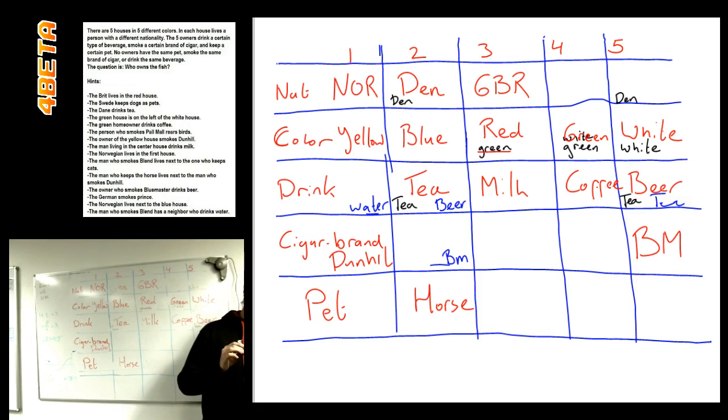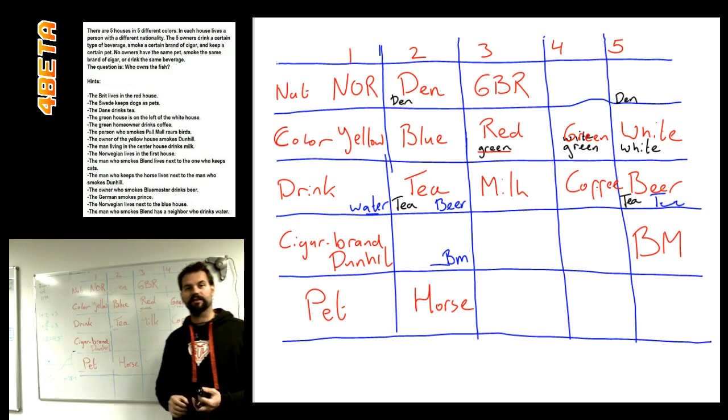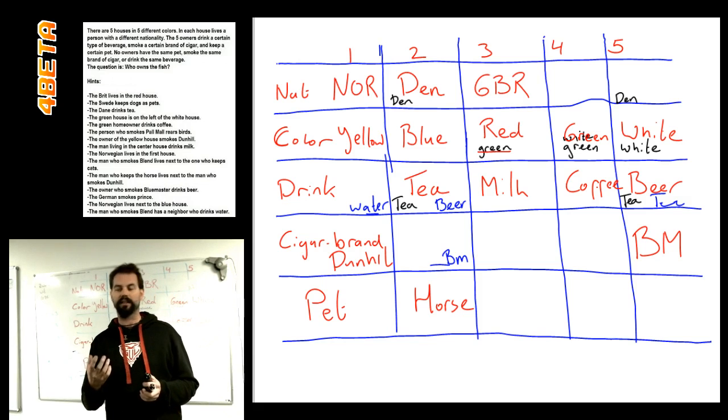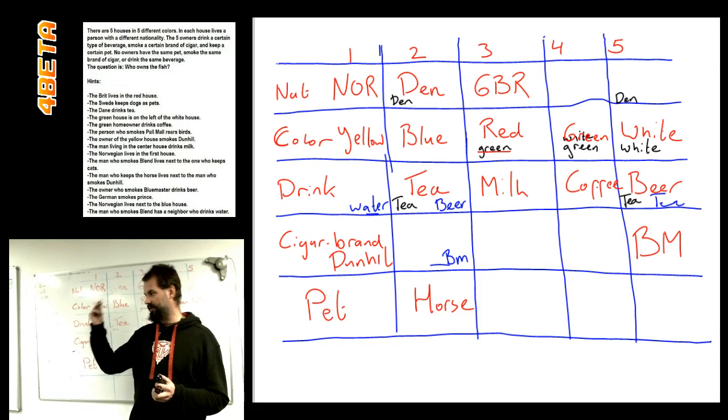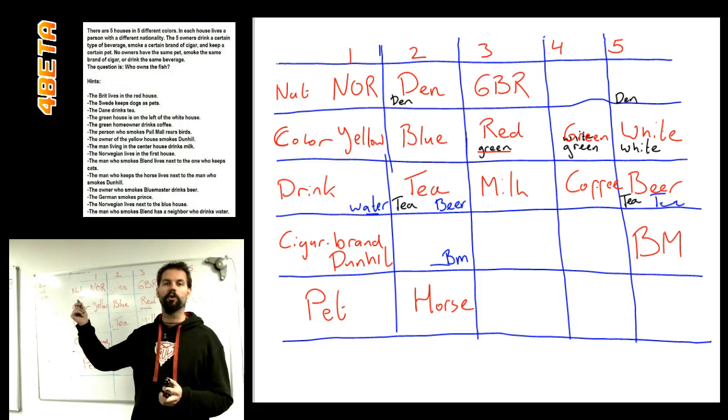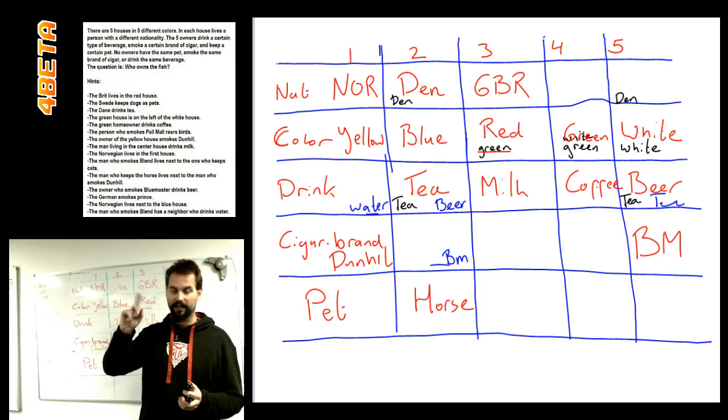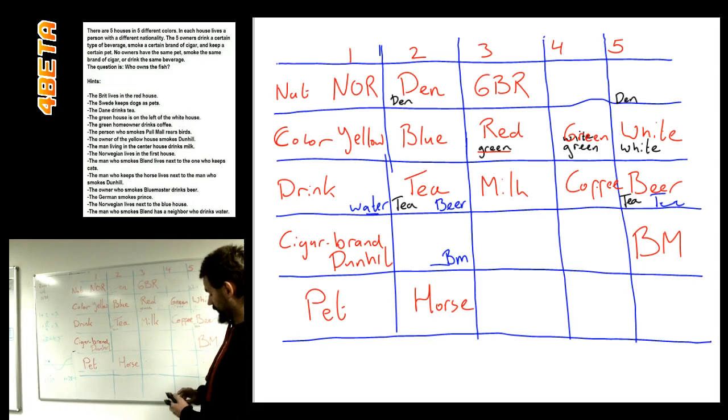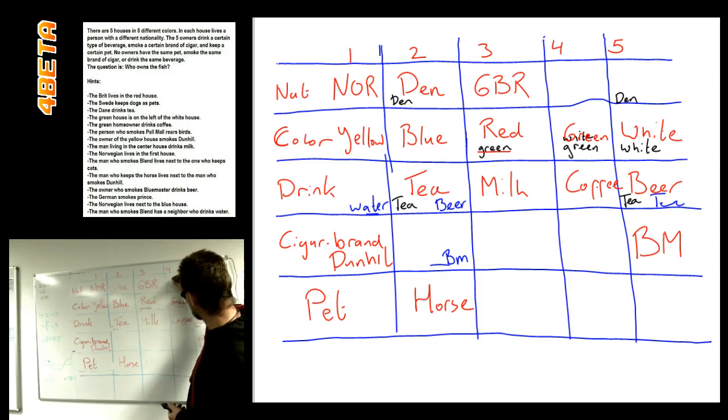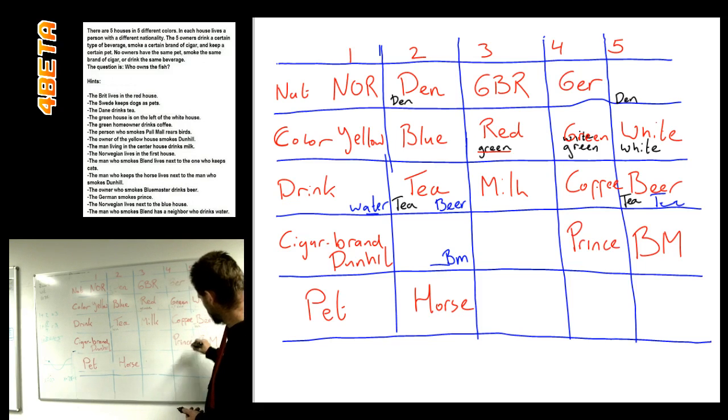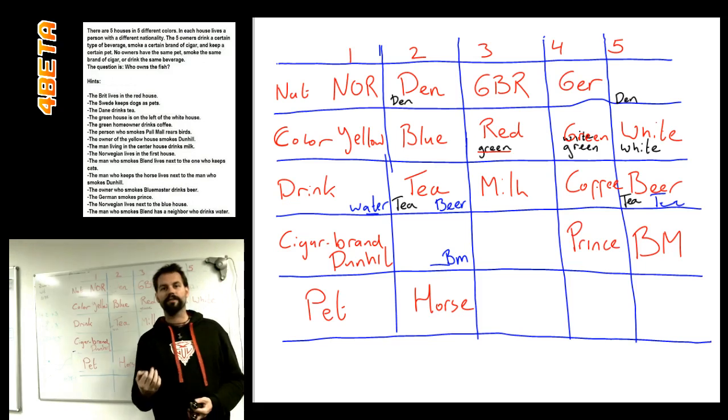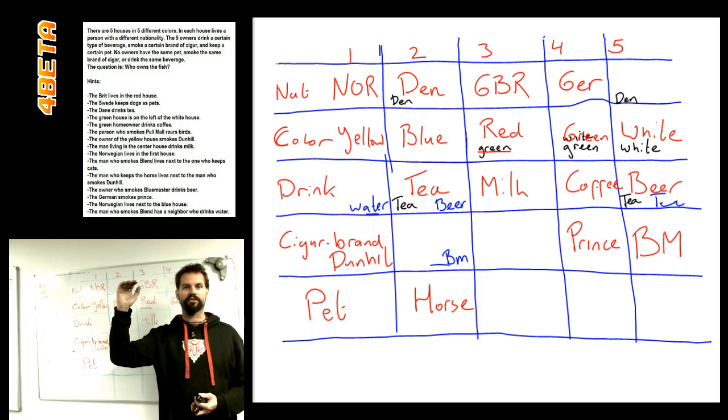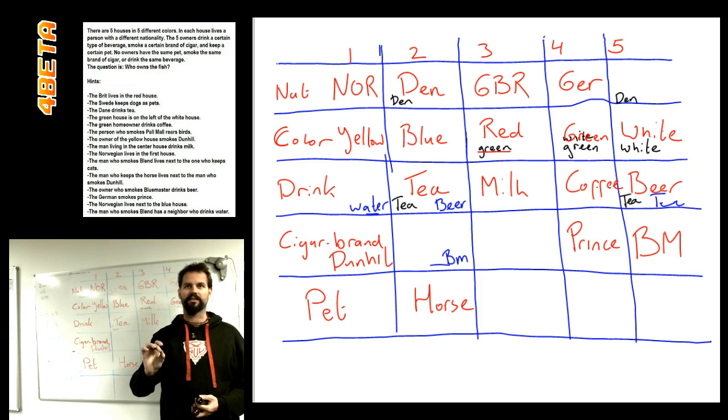And that gives us another slot directly to fill. Because we have the German guy who smokes prints. And the German guy that smokes prints can only be put in house number four. Because all the other houses already have either a nationality assigned or a single brand assigned.